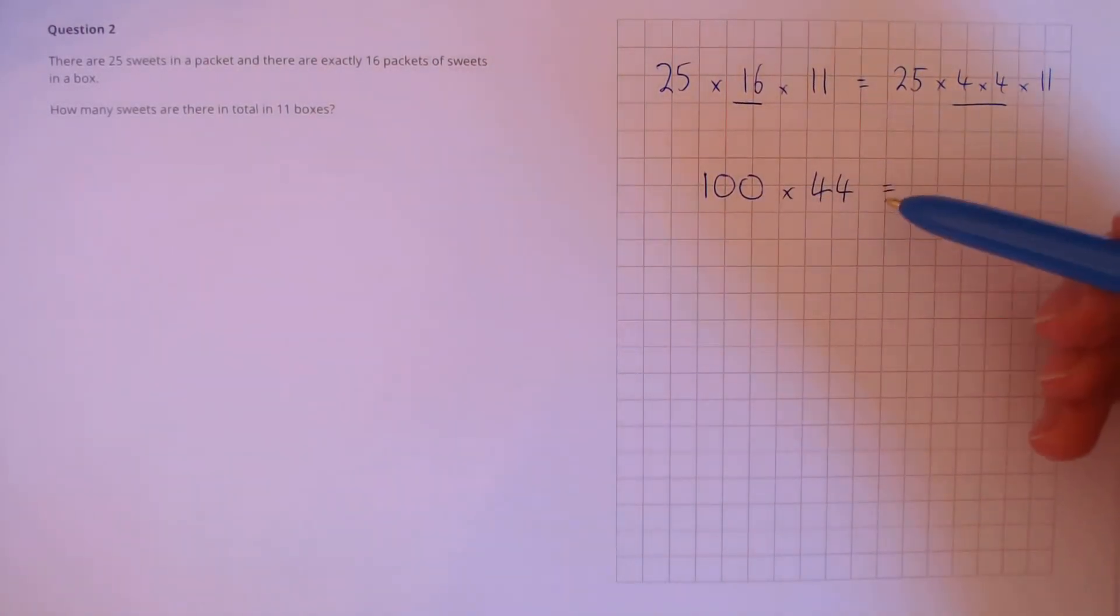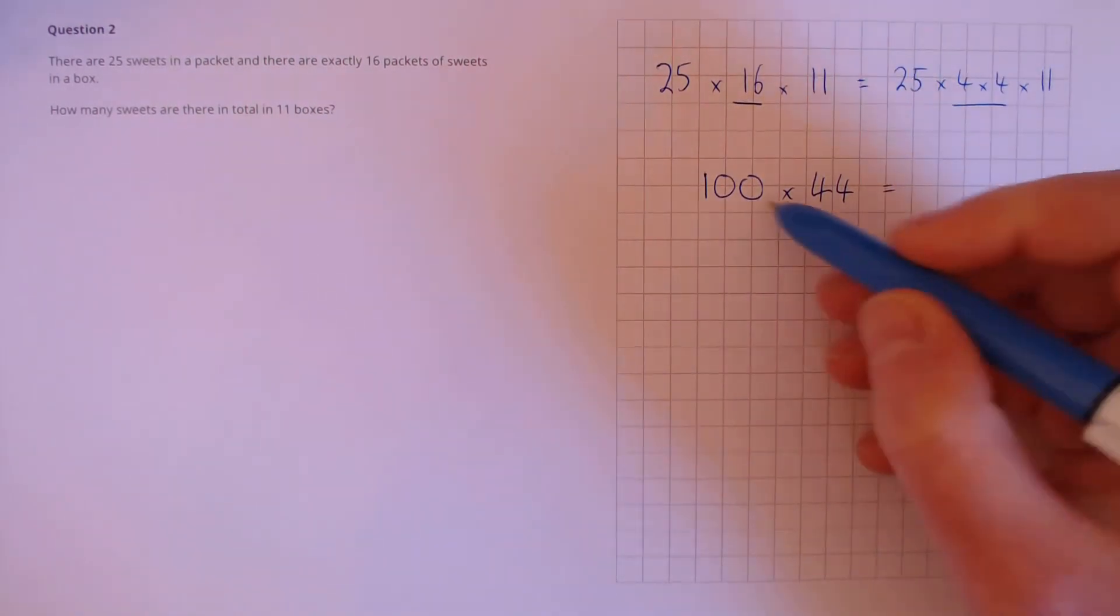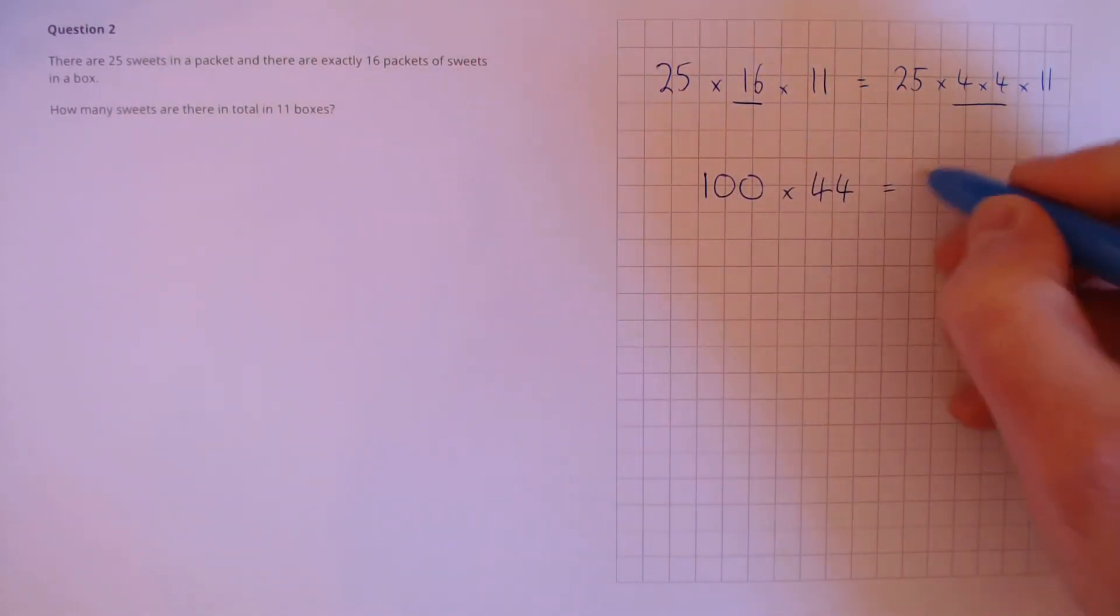This is a much easier sum than the above. To multiply 44 by 100, we get 4,440.